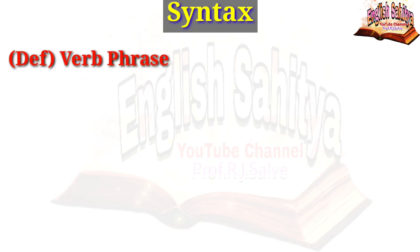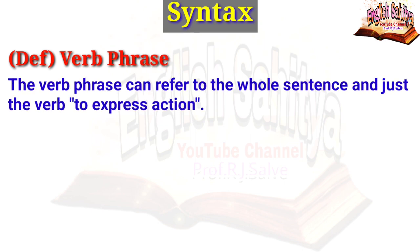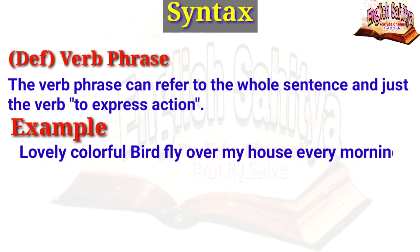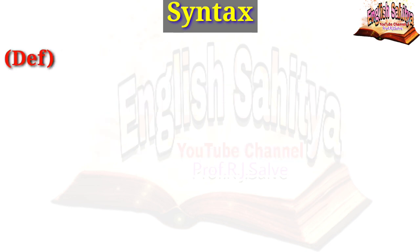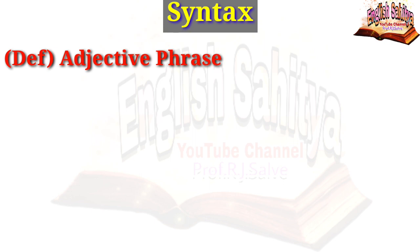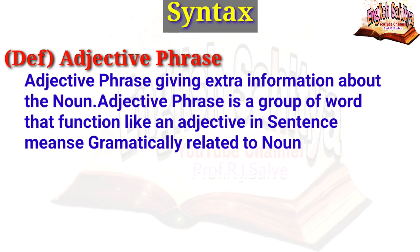First, the noun phrase. A noun phrase includes a noun — person, place, or thing. In a noun phrase, the noun is the head word. For example, 'a great English teacher' — here 'teacher' is the noun and head word. Then the verb phrase: the verb phrase can refer to the whole predicate and contains the verb expressing an action. For example, 'lovely colorful birds fly over my house every morning' — here 'birds' is the noun, 'fly' is the verb, and 'lovely colorful' is a modifier.